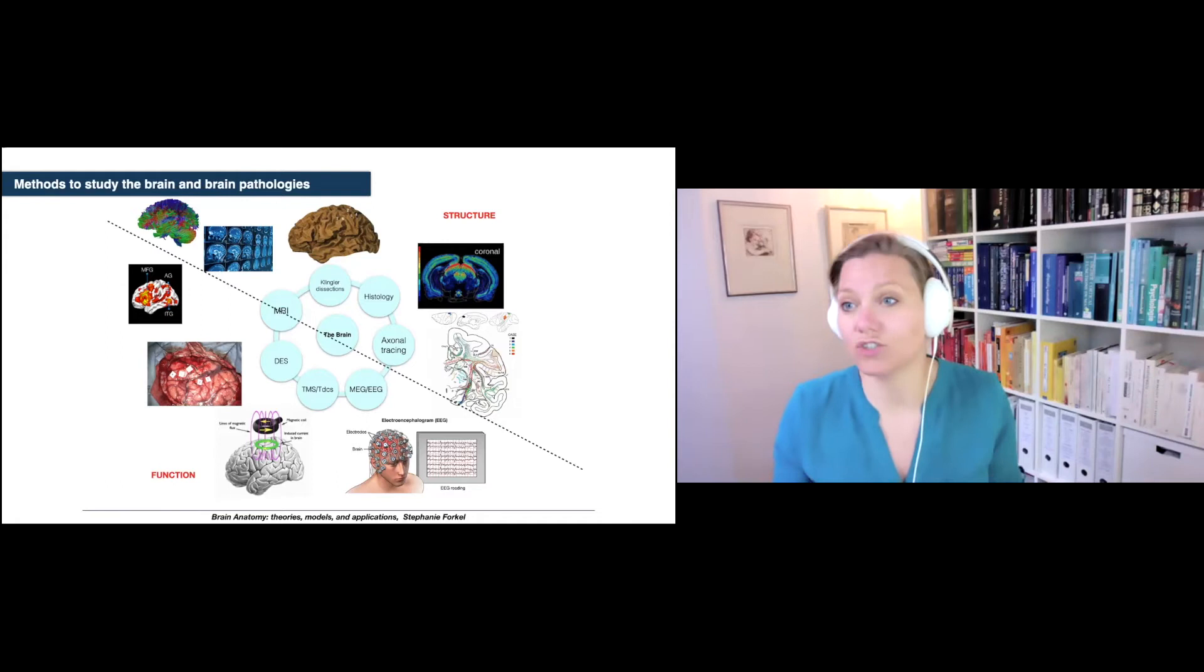Those can broadly be separated into two groups, and one group looks mainly at the structure of the brain and the other group looks at the function of the brain. Some of you might think why I cut through MRI, and the reason for that is that MRI is such a versatile tool that we can actually use it for many different things. We can look at the structure and the function of the brain.